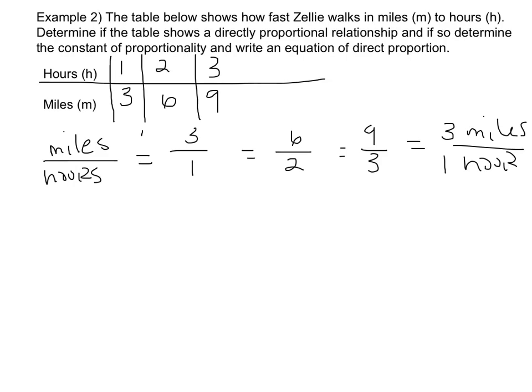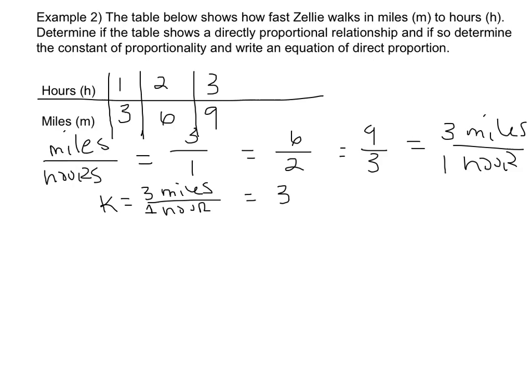So then my constant of proportionality will be 3 miles or 3 miles per hour. I'm going to just write K equals 3 or K equals 3 miles per 1 hour.